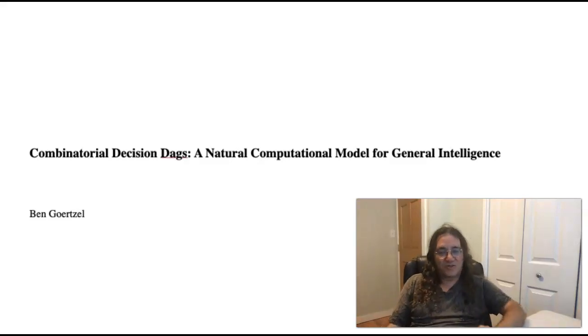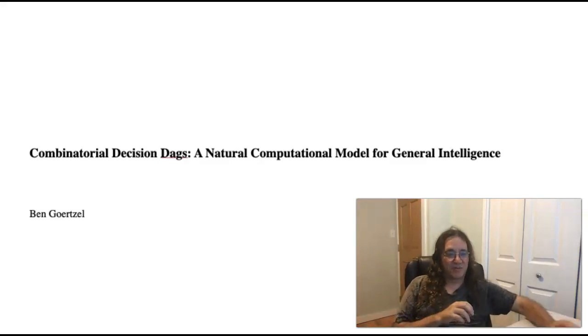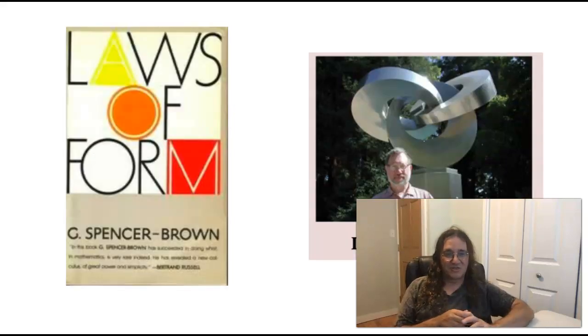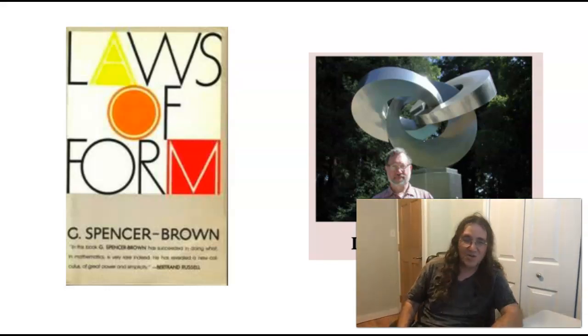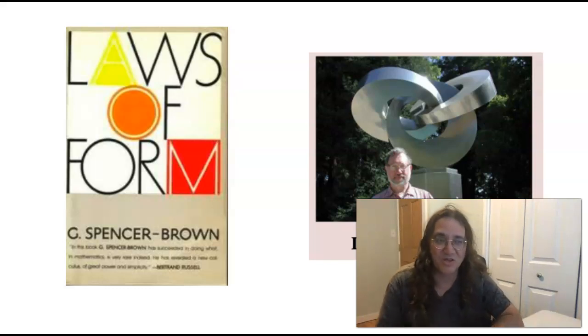I'm going to now briefly summarize some of the ideas in the paper Combinatorial Decision DAGs as a natural computational model for general intelligence. These ideas really have multiple roots. On the more philosophical and conceptual side they're rooted in the ideas of Spencer-Brown from his book Laws of Form, which gives a sort of formal logic of paradox and contradictions and imaginary truth values.